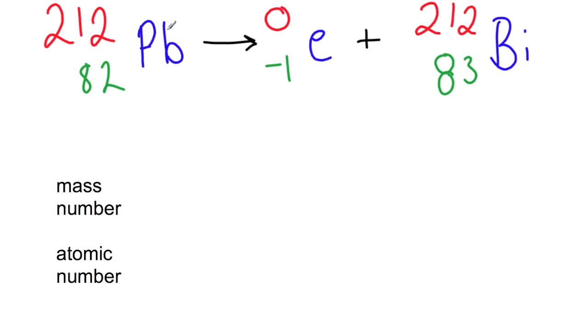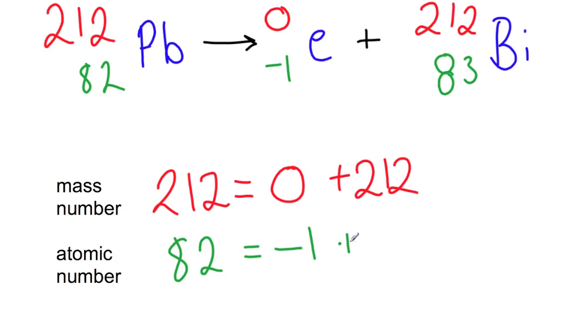So the mass number is very simply, 212 on the left-hand side is equal to 0 plus 212. So we've got no changes there. The atomic number, we have 82 on the left-hand side. We have minus 1 for the electron plus 83.